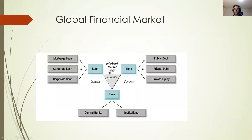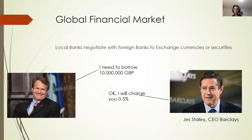We call this rate the interbank rate because it's between banks, so it is always a reference. If you ask your British friend to lend you 10 million pounds at 0.5%, it doesn't make any sense because the reference rate is already this cheap — he would have to increase that rate for you.